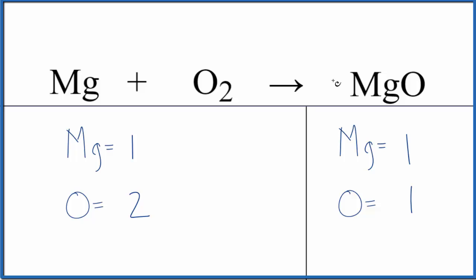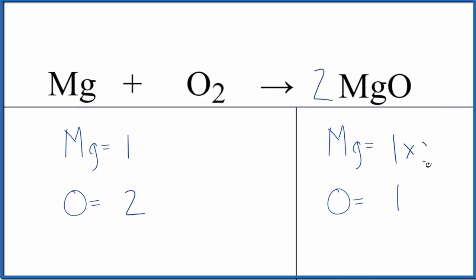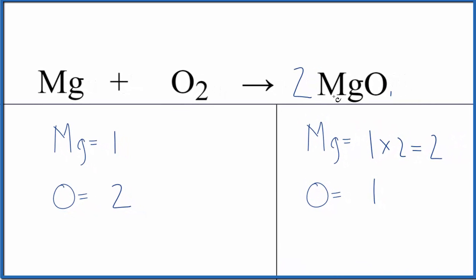It looks like if we put a 2 here as our coefficient in front of the MgO, 1 times 2, that'll give us two of those, 1 times the 2 here. Now we have two oxygens. The oxygens are balanced.